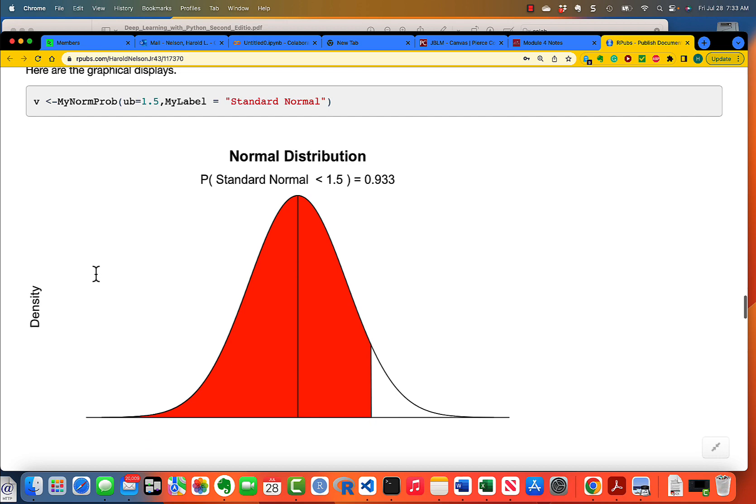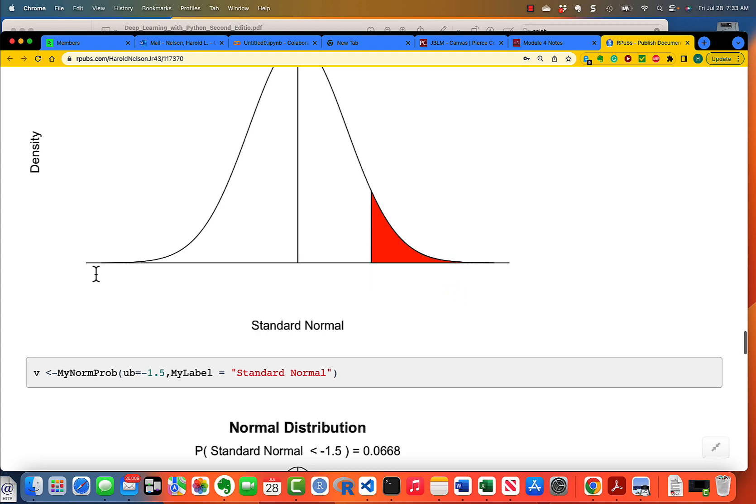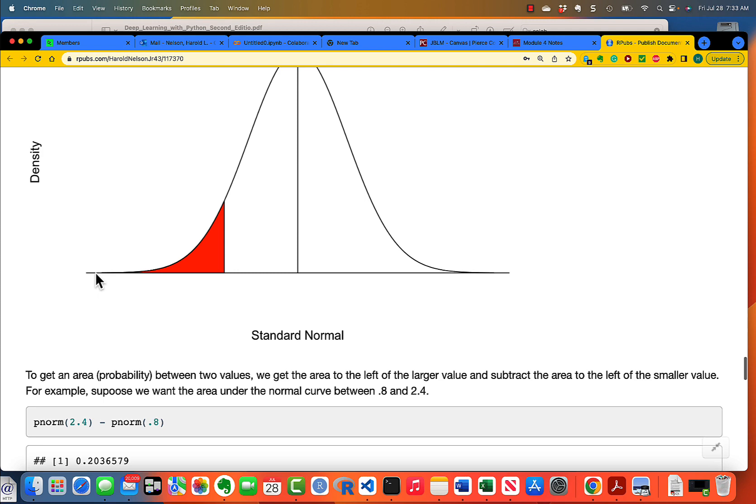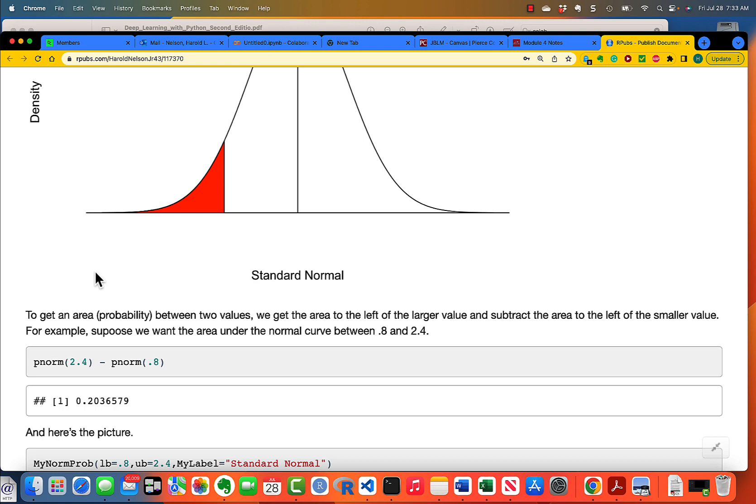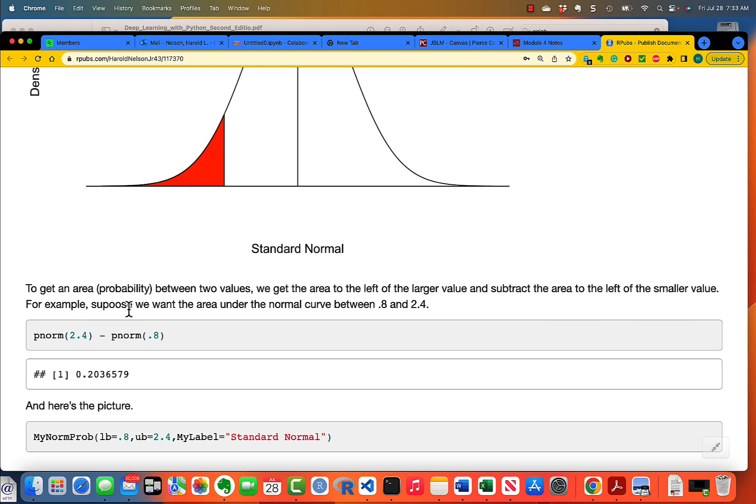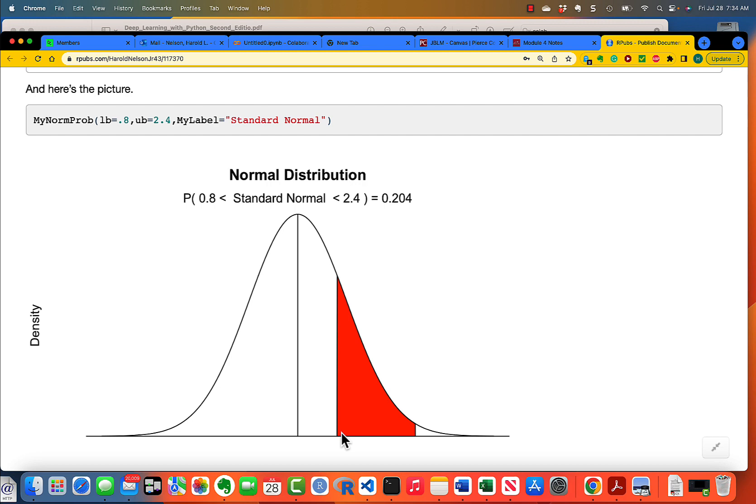And if you want the area to the right, instead of to the left, you take 1 minus pNorm of 1.5. Because the entire area from negative infinity to positive infinity is going to be 1. And here's a couple more examples of the function. And here's a good example of finding the area between 0.8 and 2.4. So here's the 0.8, here's the 2.4. And the area between those two, that is between a lower bound of 0.8 and an upper bound of 2.4, we have 0.204.